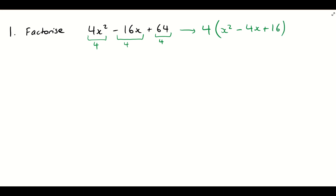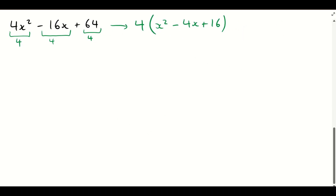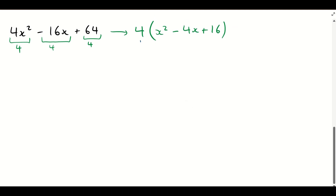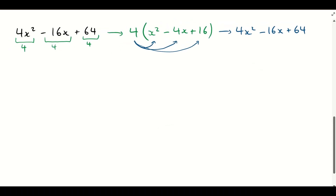How could we check that this answer is correct? We expand it back out and make sure we get what we started with — this is kind of a two-in-one problem. So let's expand: 4 times x² gives 4x², 4 times minus 4x is minus 16x, and 4 times 16 gives positive 64. That's exactly what we started with, so we've definitely got our answer correct.